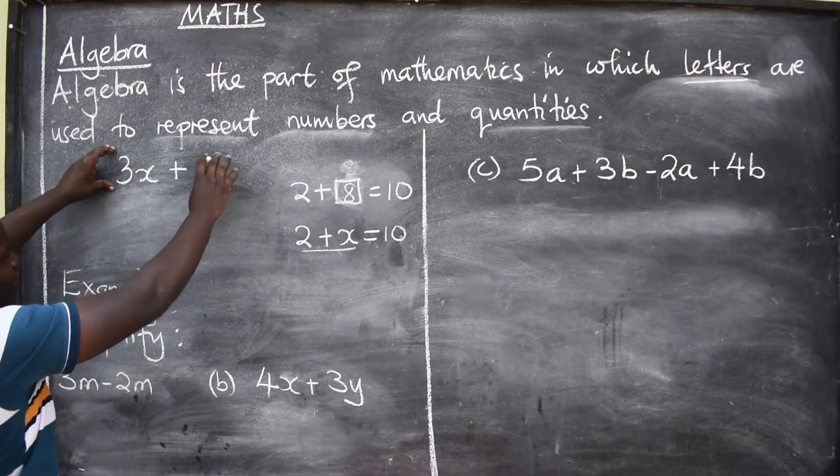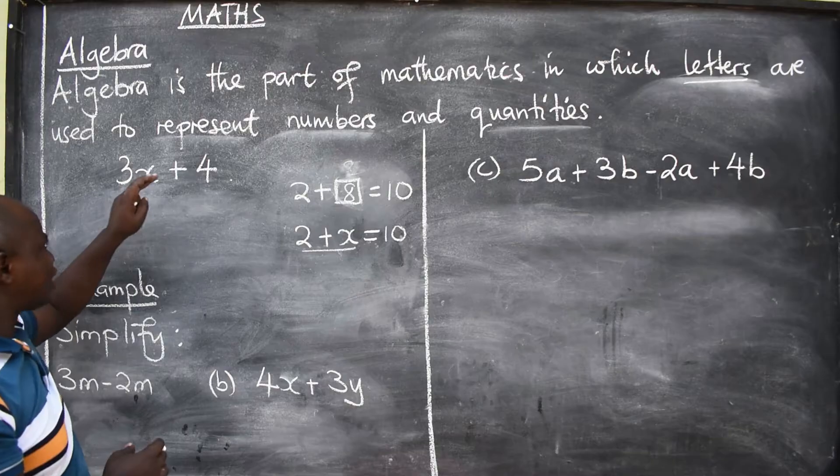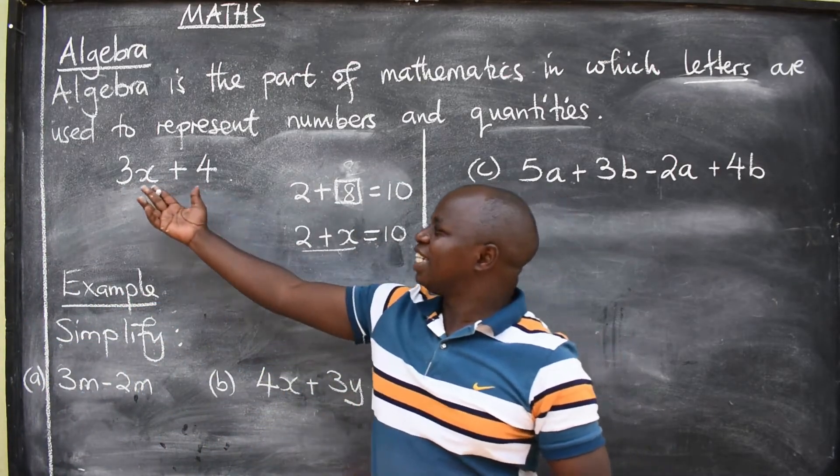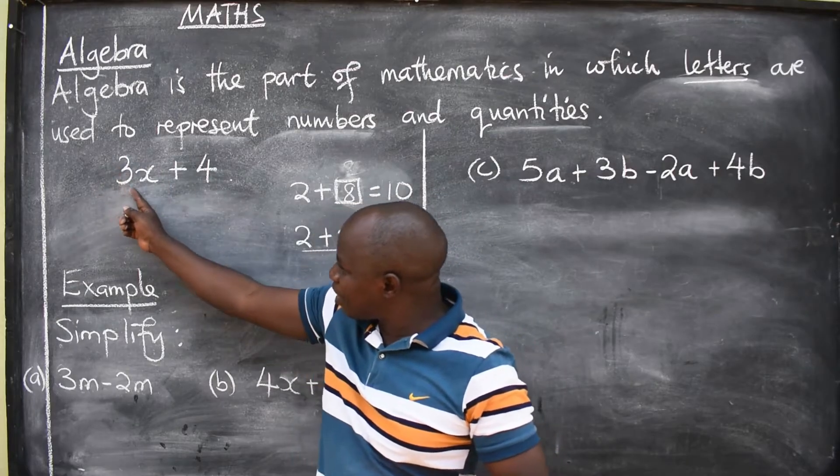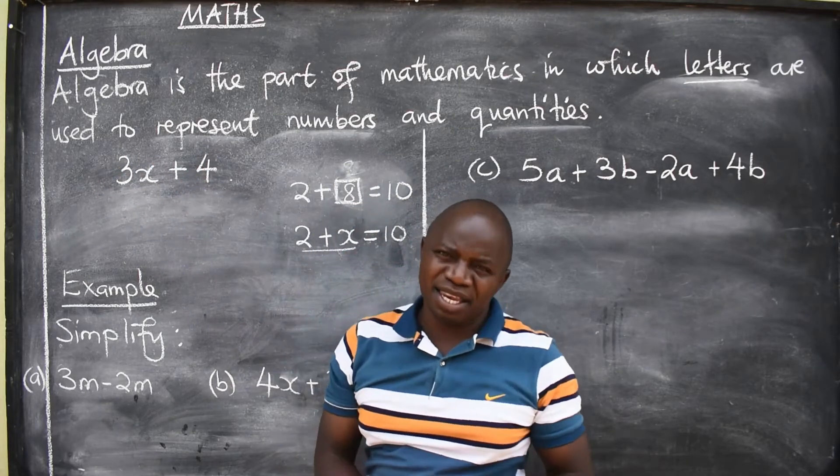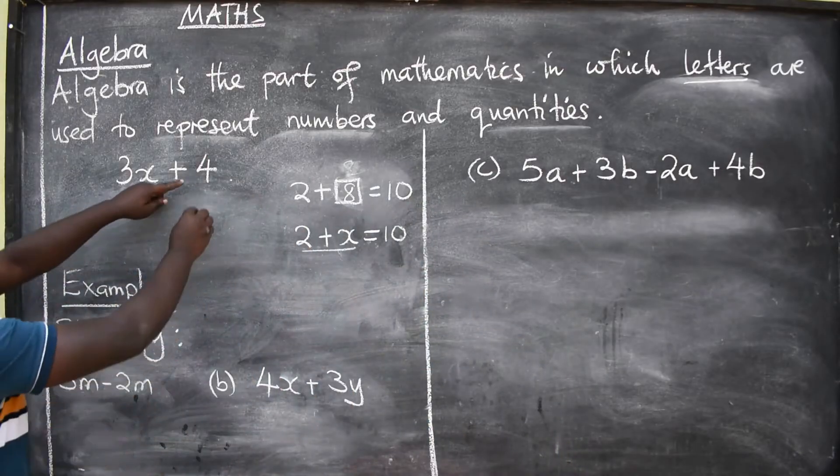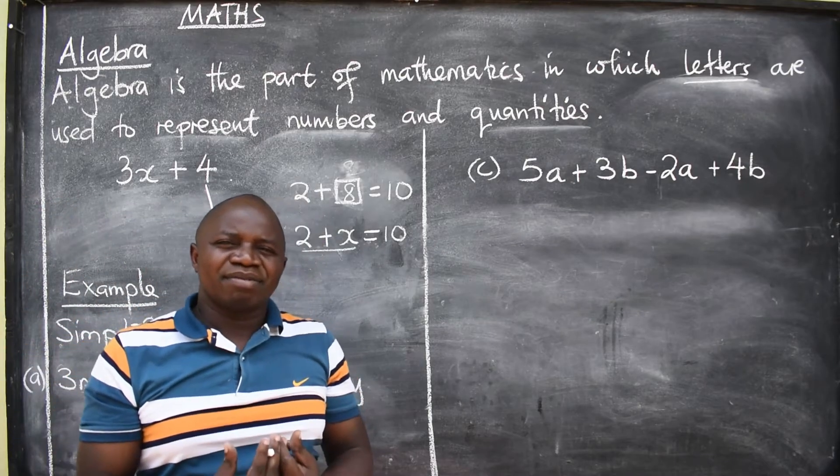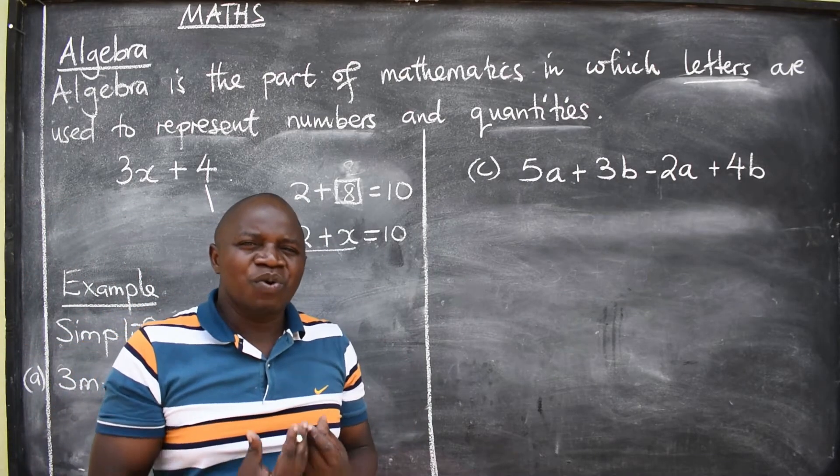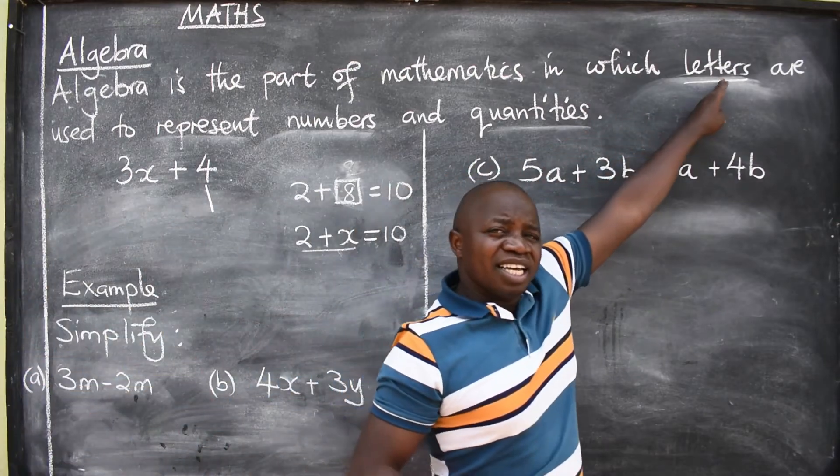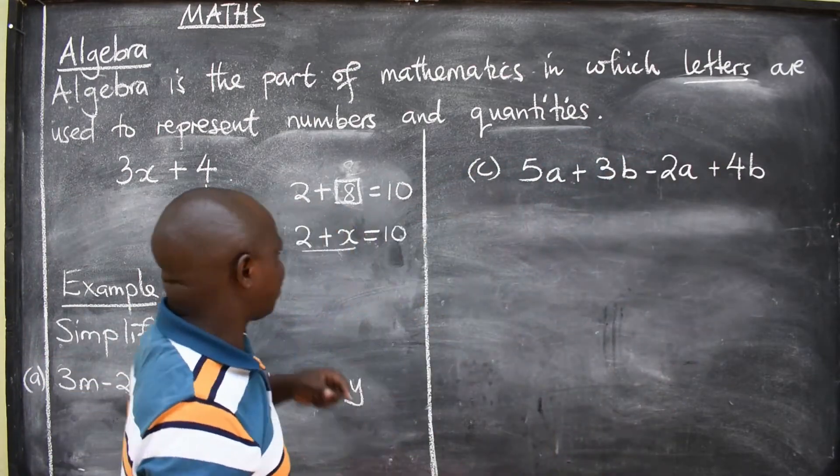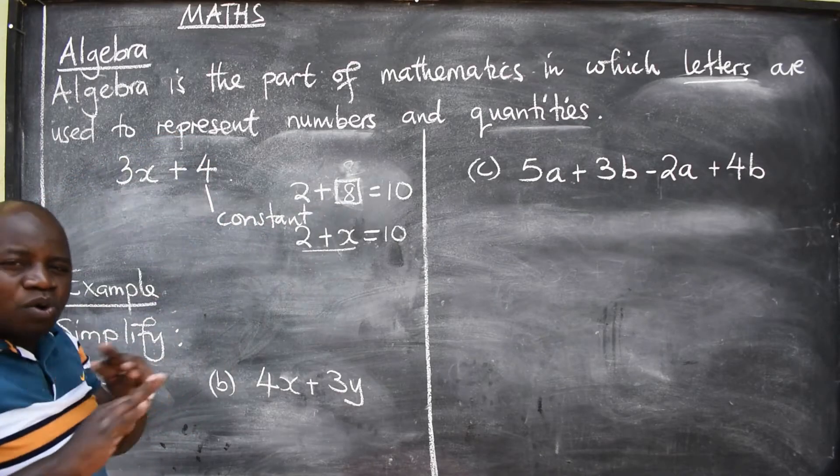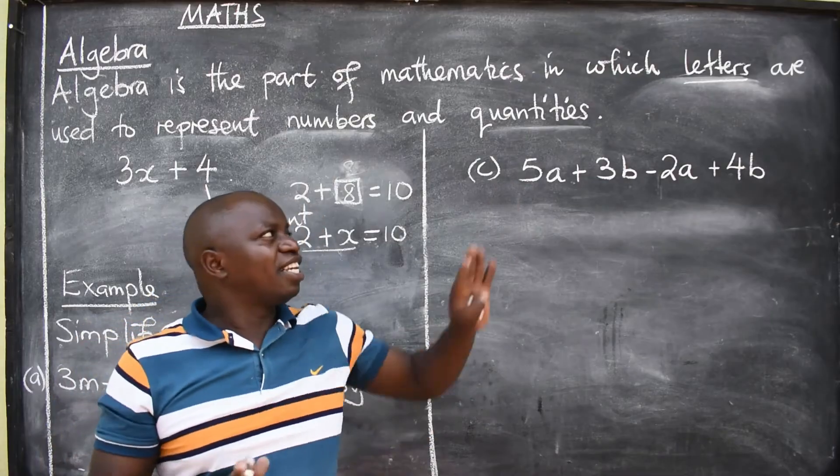So now, our interest is on this expression here, 3x plus 4. In this expression that you are seeing, each term - so this is a term here, this is a term as well - has a meaning. Let's start with the 4. This 4 here, what does it mean? Any number in an expression without a letter, that number is called a constant. So this 4 here is constant. It's not having any letter.